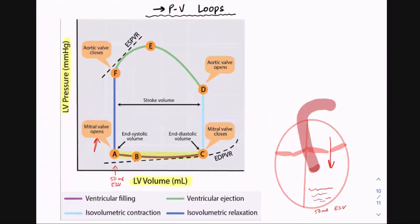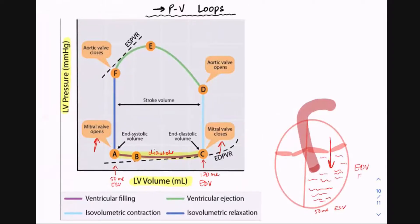We go from point A through C, increasing in volume without any change in pressure. This is my diastole or filling phase. Once I'm done filling, the mitral valve will close, and at point C — let's say it's about 120 ml — this is my end diastolic volume, the final volume in the ventricle at the end of diastole. This is where the mitral valve will be closed.